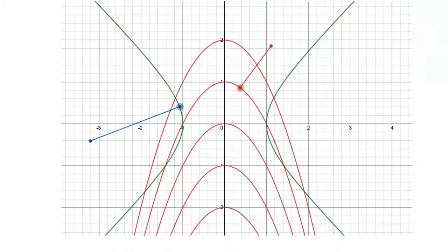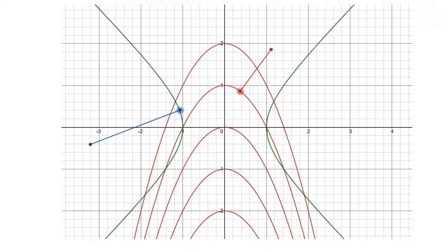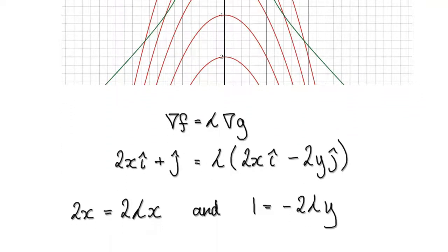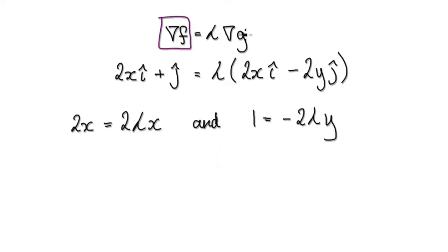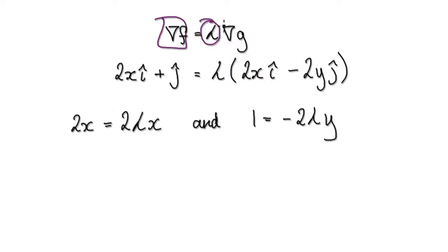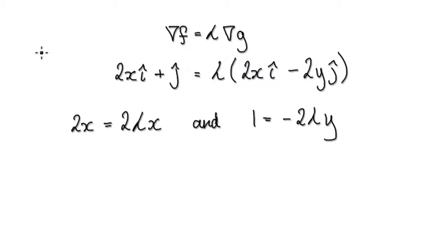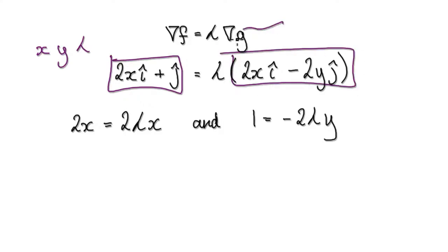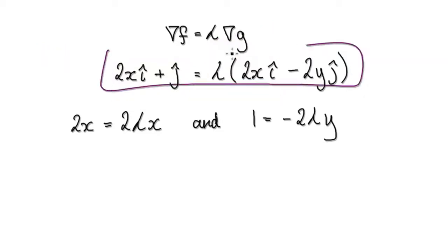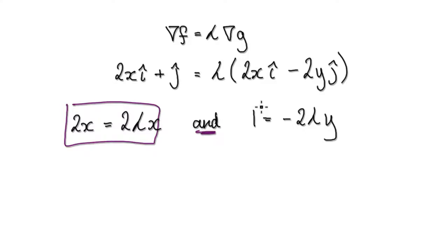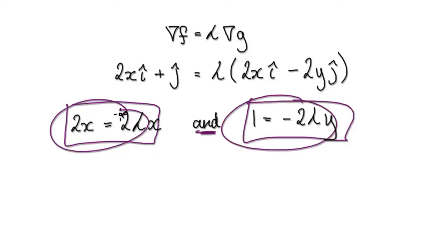Jumping back to our example: the lowest point occurs when the gradient vector of F differs from the gradient of G by a scalar amount. The lowest point occurs when ∇F equals some scalar constant λ times ∇G. This translates to a system of equations — we need to find x, y, and lambda such that these conditions are satisfied.